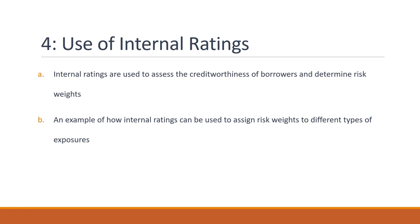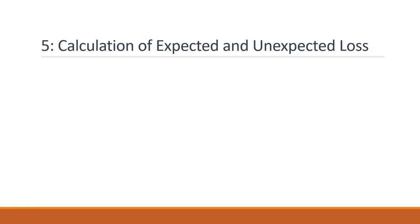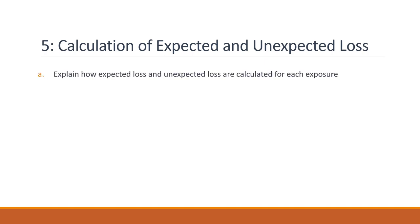Overall, the use of internal ratings to assign risk weights enables the bank to better understand and manage credit risk by tailoring capital requirements to specific types of exposures. Next, we have the calculation of expected loss and unexpected loss for each exposure. Expected loss is the estimated loss that a bank can expect to incur over the life of an exposure. Unexpected loss is the amount of loss that can occur beyond the expected loss due to unforeseen events.